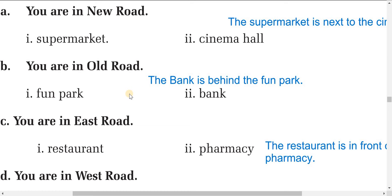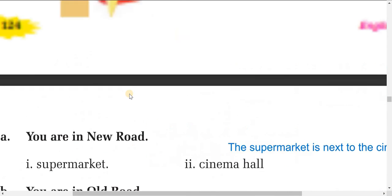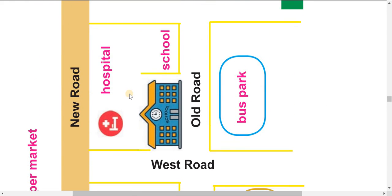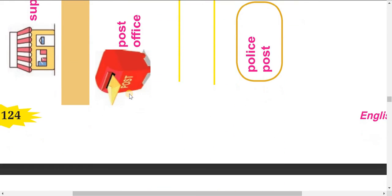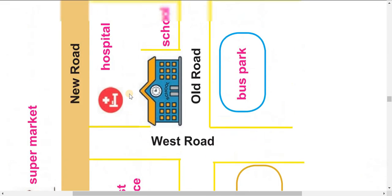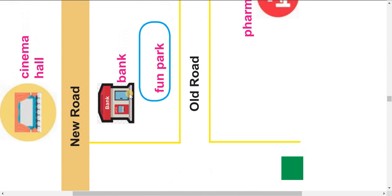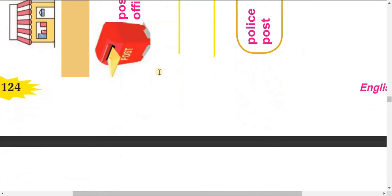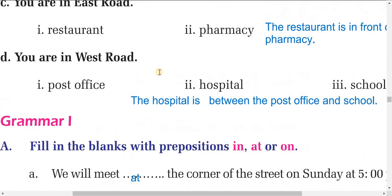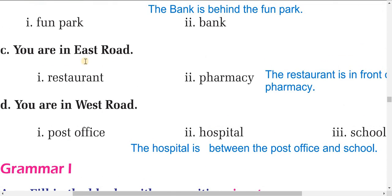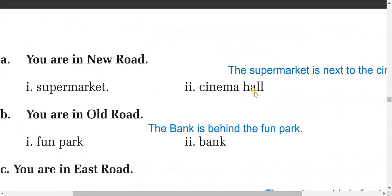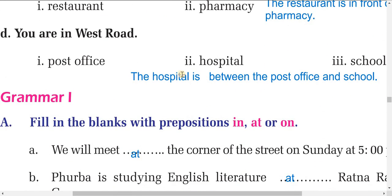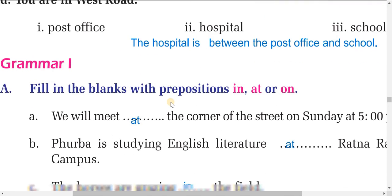The bank is just behind the fun park. Next: you are on East Road — the restaurant is in front of the pharmacy. And the hospital is between the post office and the school — you can see this on the map.